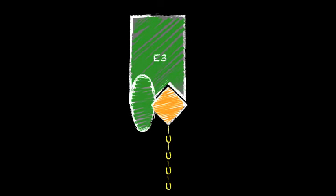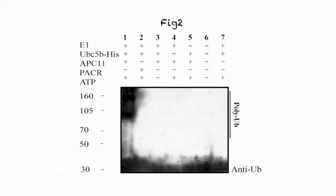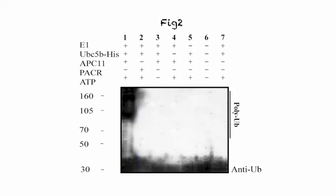This finding suggests that PACER plus APC2 may form a functional E3-like ligase capable of ubiquitination. To verify this, an ubiquitination assay was used. APC11 was used as a positive control; a smear in this lane demonstrates that APC11 promotes ubiquitination of a substrate. However, when PACER was tested, no smear was observed. This surprising result indicates that PACER does not promote ubiquitination.